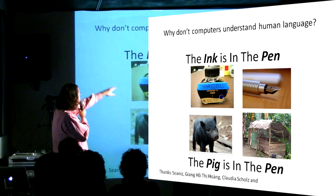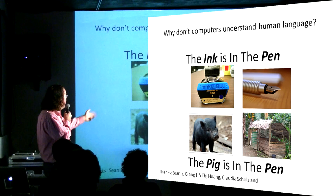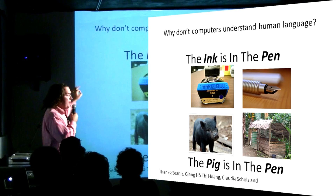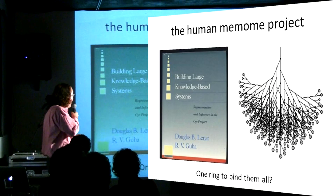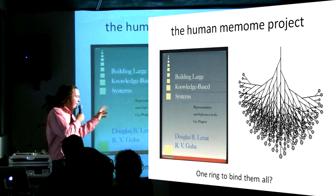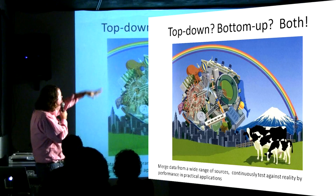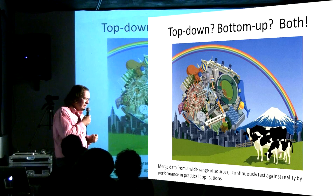This brings up a question: what do words really mean, and why do computers have a hard time understanding language? Consider 'the ink is in the pen' and 'the pig is in the pen' — Noam Chomsky can't help you with this problem. You have to know something about ink and pigs and pens. There are just all these facts you have to know. People have written down the whole story of what it is to be human, and there's a guy Doug Lenat who had an idea back in the 80s called the Cyc project, which tried to capture and organize all of this from the top down.